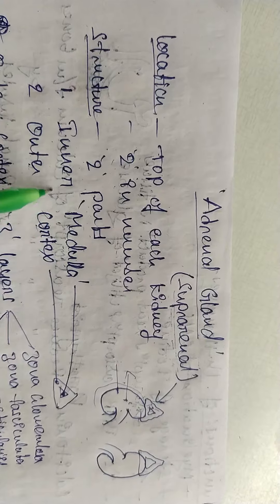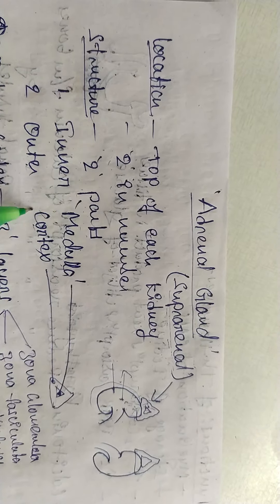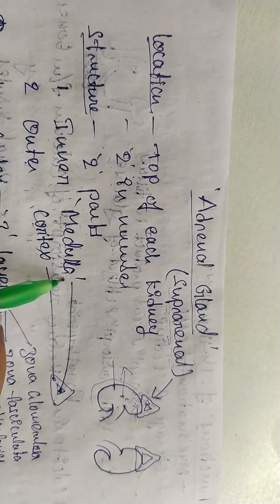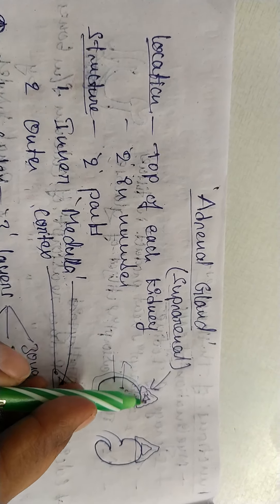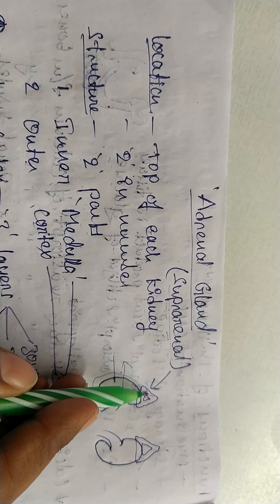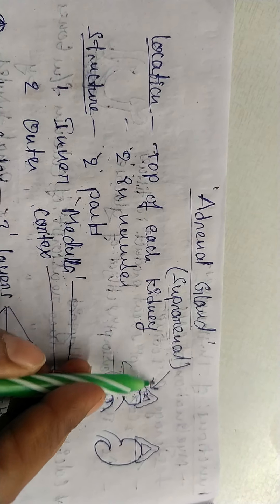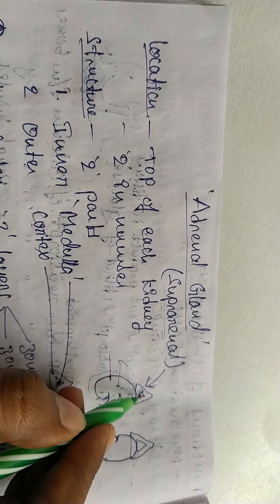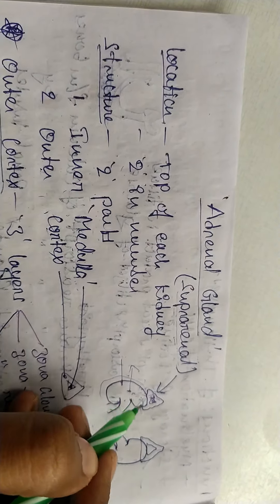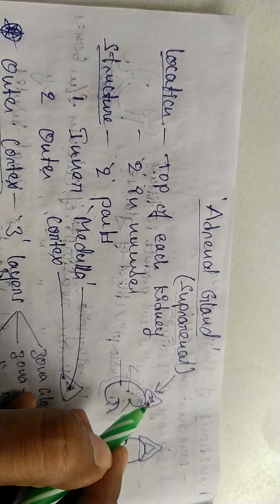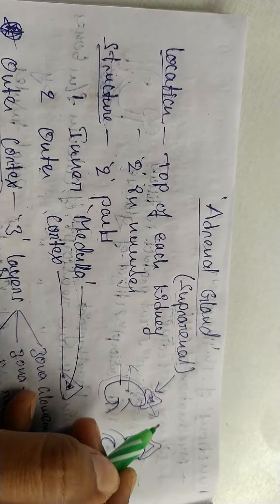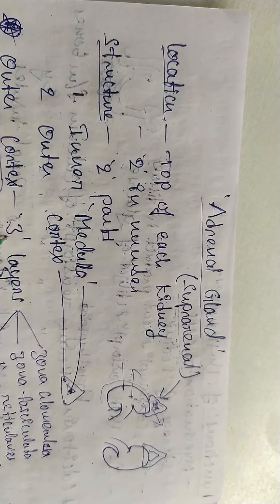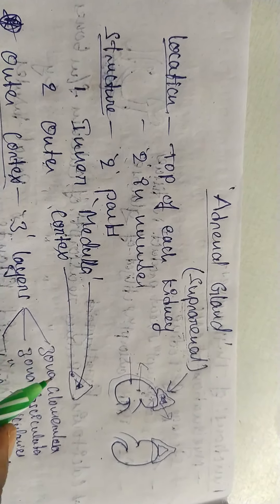In terms of structure, the adrenal gland consists of two main parts. One is the adrenal medulla, which is the inner region of the adrenal gland. The outer border is the adrenal cortex. The outer cortex is composed of three types of layers.